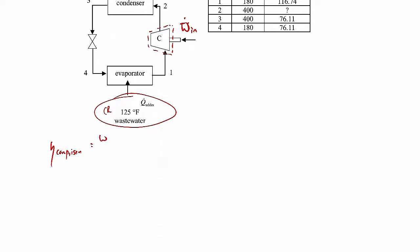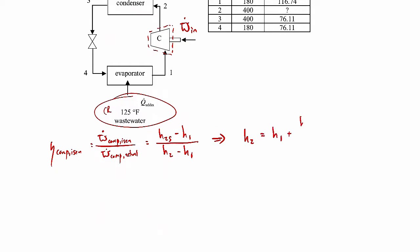Looking at the notes, isentropic efficiency is defined as the power required under isentropic conditions divided by the actual power. When you do the first law analysis around the compressor, the numerator comes out to be H2S minus H1, and the denominator is H2 minus H1. The mass flow rates cancel, so you can rearrange to solve for H2: H2 equals H1 plus (H2S minus H1) all over the compressor isentropic efficiency.